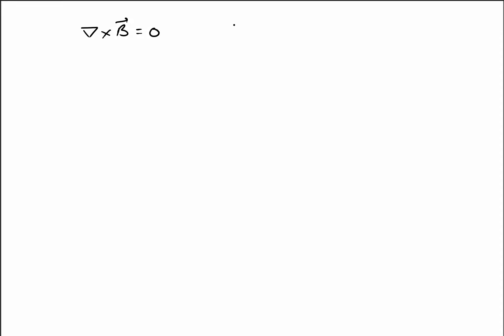In our previous lecture we have seen how to calculate the magnetic flux density using Biot-Savart law as well as magnetic vector potential. Now in a region when there is no current density, we can write the Maxwell equation as del cross B equals zero. Whenever we have steady current density sources we have del cross B equal to mu naught J; however when J is zero then we have del cross B equals zero.